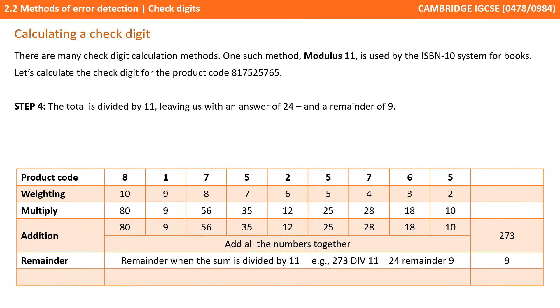We then work out the remainder of this number once divided by 11. So 273 divided by 11, well 11 goes in 24 times and we have 9 remaining. So 9 is the number we're now dealing with.